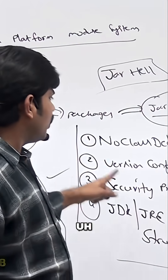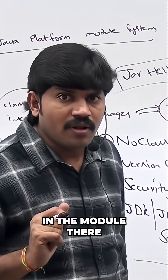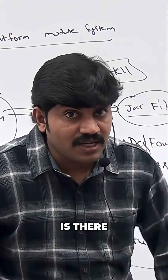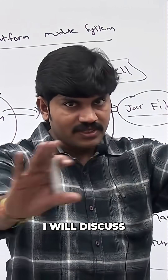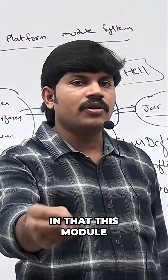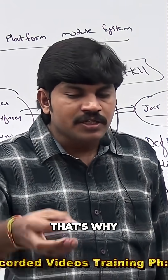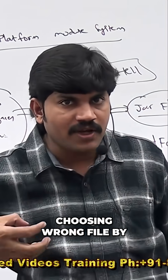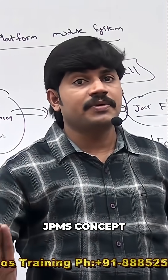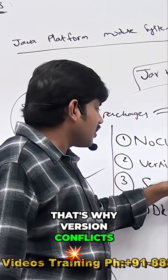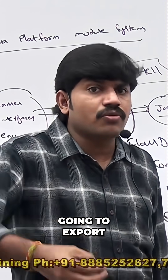In modular programming, you will never get a version conflict. There is one configuration file called module-info.java, where you can specify which classes from which module are required. Because of this, the JVM never picks the wrong file, so version conflicts won't occur in the JPMS concept.